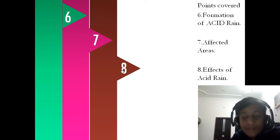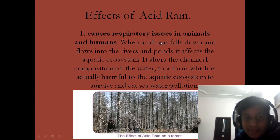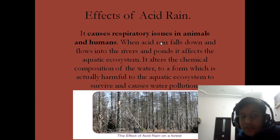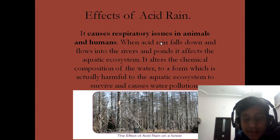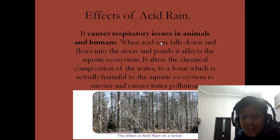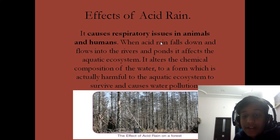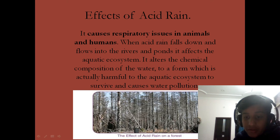Effects of acid rain: It causes respiratory issues in animals and humans. When acid rain falls down and flows into rivers and ponds, it affects the aquatic ecosystem. It alters the chemical composition of the water to a form which is harmful to the aquatic ecosystem and causes water pollution.